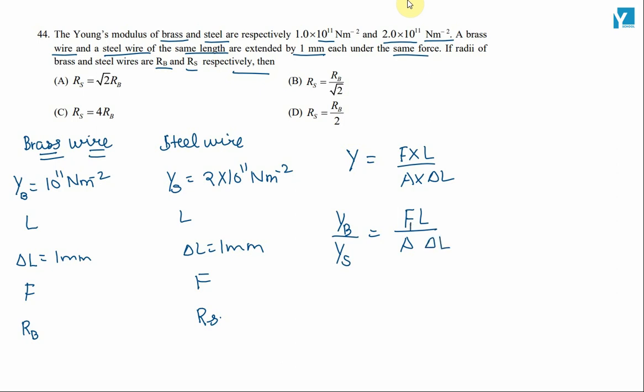This will be force on brass wire, length of brass wire, area of brass wire and delta L of brass wire. In a similar way, we will put the values for steel wire: force on steel wire, length of steel wire, area of cross section of steel wire and delta L of steel wire.